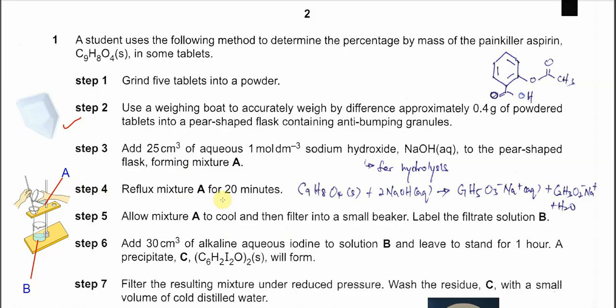Later, we need to draw the reflux setup, we will discuss later. This is the equation for the hydrolysis. So when aspirin reacts with sodium hydroxide, undergoes hydrolysis, it will form two salts. Basically the bond breaks here and it will form two compounds. This one will form this salt and this part will form another one.